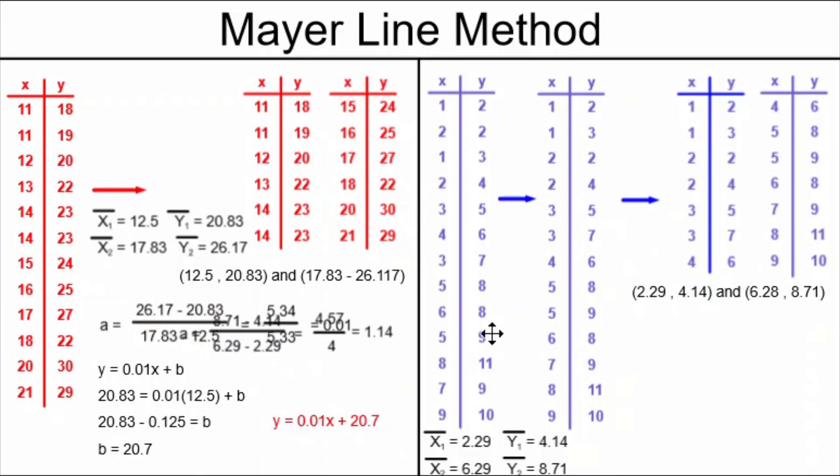In the blue example, we are doing the exact same process. The slope formula is used to find a slope of 1.14. That tells us our equation is y equals 1.14x plus b, but we have to find our b.